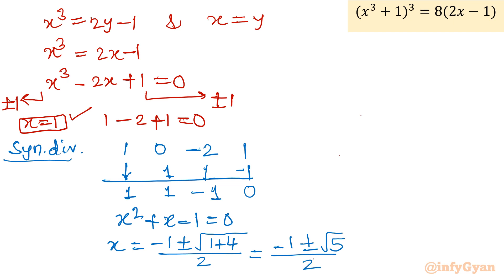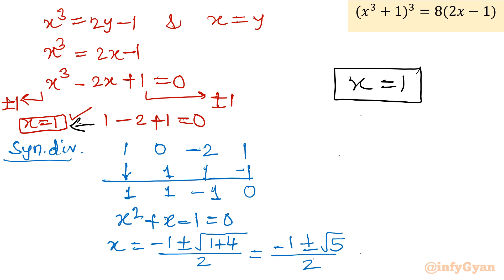So from the first factor x − y = 0 we have found three solutions: x = 1 and x = (−1 ± √5) / 2. Now let us move on to solve the second equation.